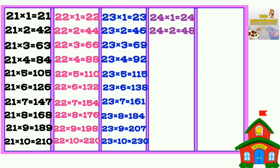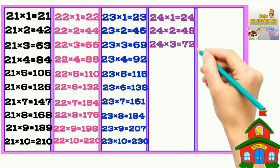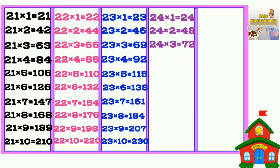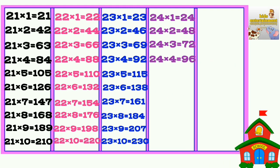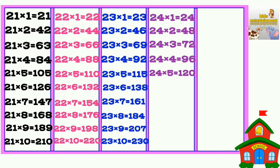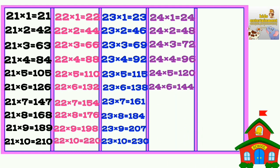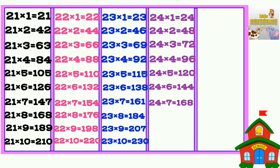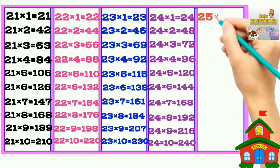24 times 1 is 24, 24 times 2 is 48, 24 times 3 is 72, 24 times 4 is 96, 24 times 5 is 120, 24 times 6 is 144, 24 times 7 is 168, 24 times 8 is 192, 24 times 9 is 216, 24 times 10 is 240.